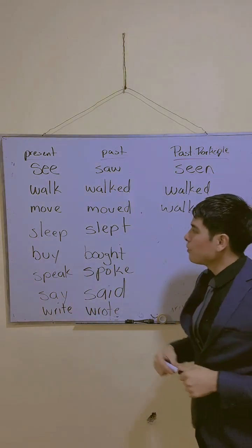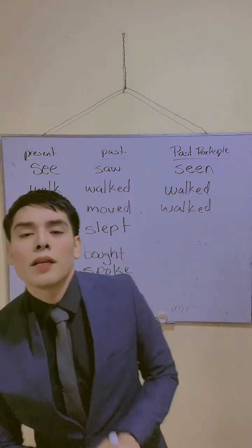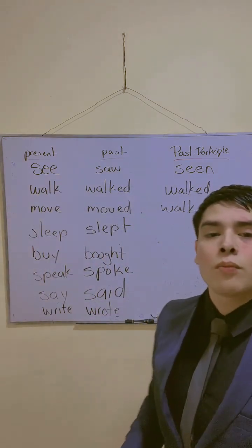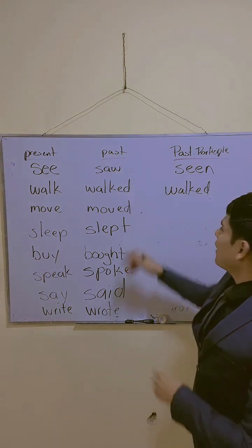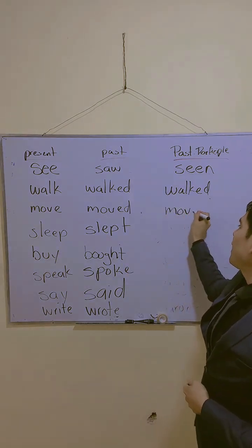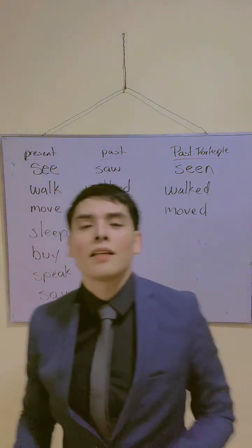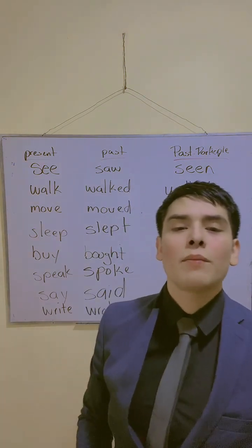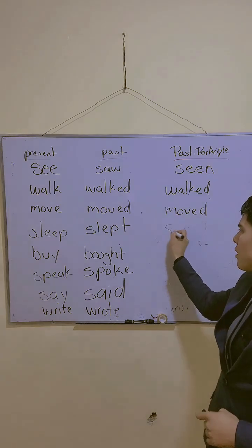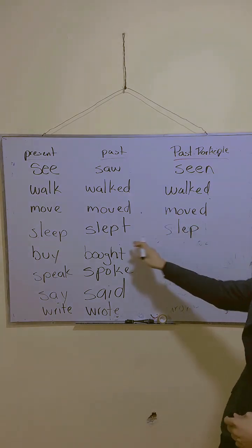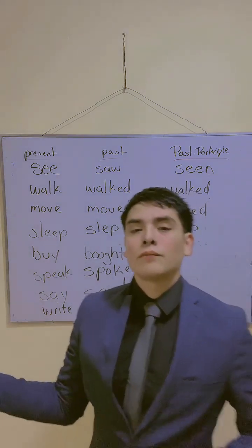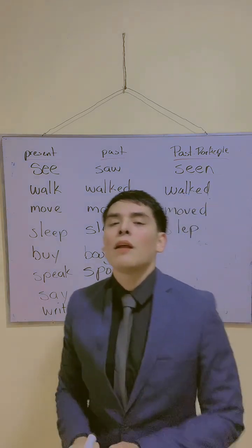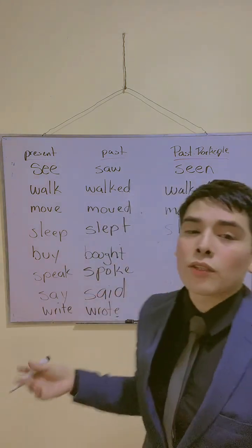Vámonos con el past participle de sleep — slept en past. ¿Cuál sería el pasado participio? Dice Annie — slept. Muy bien, slept. Hace ratito les dije que los participios de los verbos irregulares cambian. Algunos coinciden — que son igual también el pasado, como si fueran verbos regulares, el pasado y el participio es igual — pero hay unos que no. Entonces hay que estar atentos a eso.